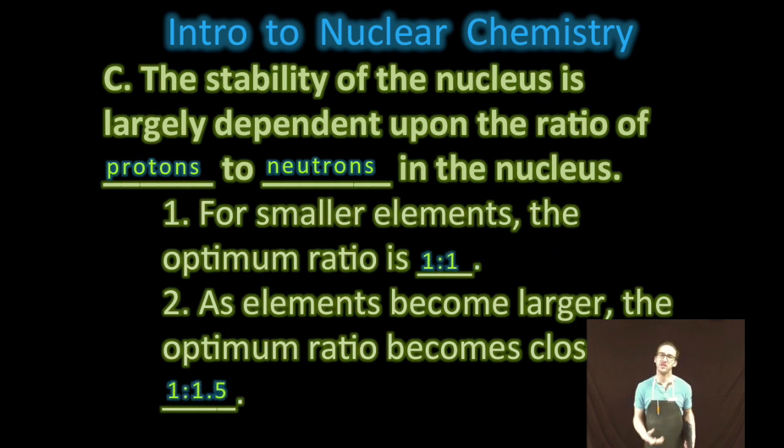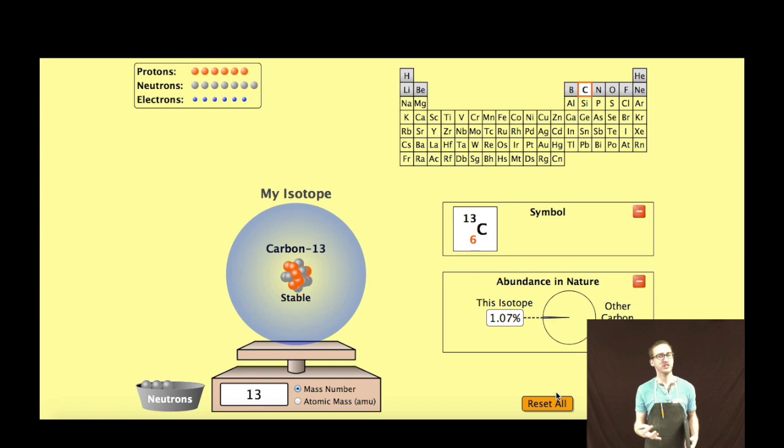But it turns out that the strong force is only so strong, and you can't just put any combination of protons and neutrons together and expect to get a stable nucleus. The stability of the nucleus largely depends on the ratio of protons to neutrons in the nucleus. For smaller elements, that optimum ratio is one-to-one. As the elements become larger, the optimum ratio becomes closer to one proton for every 1.5 neutrons.